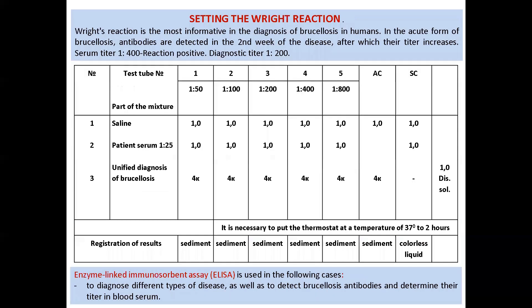Informative in the diagnosis of Brucellosis in humans is the Wright reaction. In the acute form of Brucellosis, antibodies are detected at the second week of the disease and thereafter their titer increases. The Wright reaction is of greatest value in the acute and sub-acute form. It is carried out in test tubes, in which different dilutions of the test serum are mixed with Brucellosis diagnosticum, incubated for 18–20 hours at 37°C, and results are assessed by the degree of agglutinate deposition and liquid enlightenment.